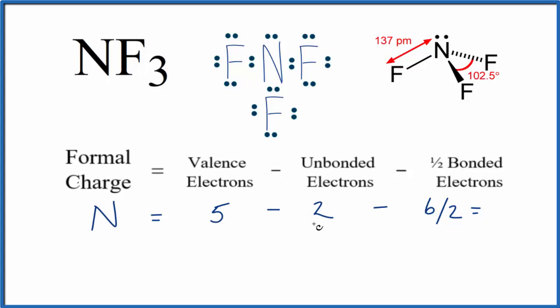Five minus two, that's three, and then six over two, that's three. So three minus three, zero. That's the formal charge on the nitrogen in NF3.